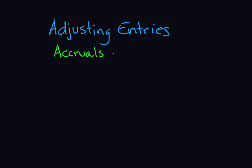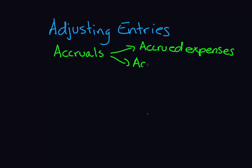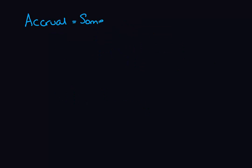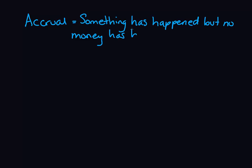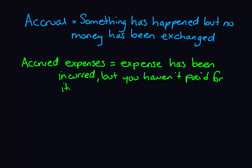Hi everyone! Today we're continuing our discussion on adjusting entries and we're going to be talking about accruals. We'll be talking about accrued expenses and accrued revenue, and I'm your instructor Brandy. Very simply, an accrual means that something has happened but no money has been exchanged. So an accrued expense is an expense that you have incurred but you haven't paid for yet.